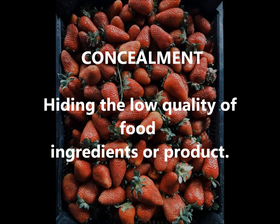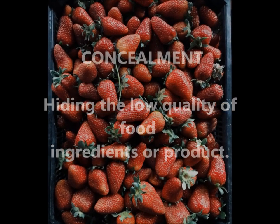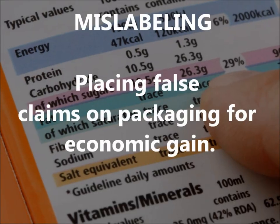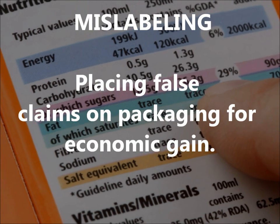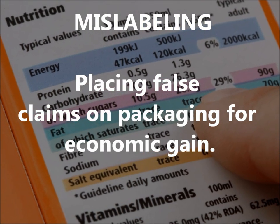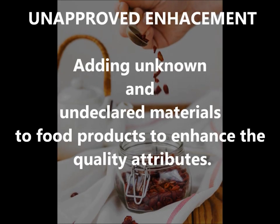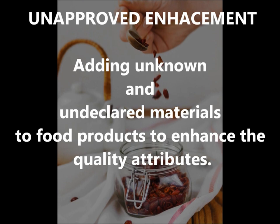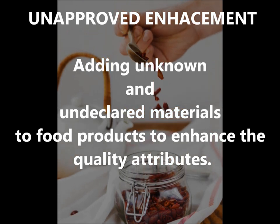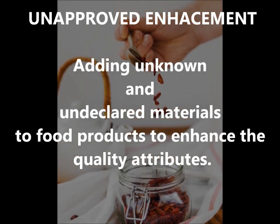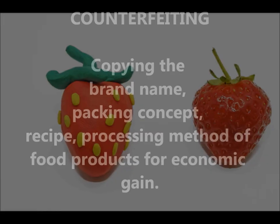Concealment involves hiding the low quality of food ingredients or a product. Mislabeling means placing false claims on packaging for economic gain. Unapproved enhancement refers to adding unknown and undeclared materials to food products to enhance quality attributes.